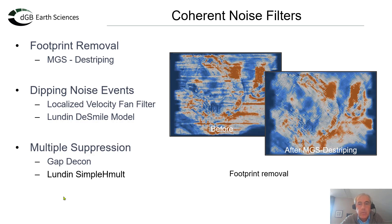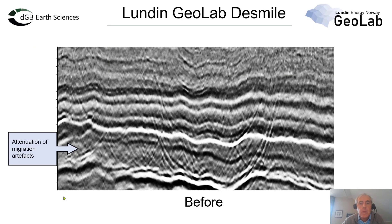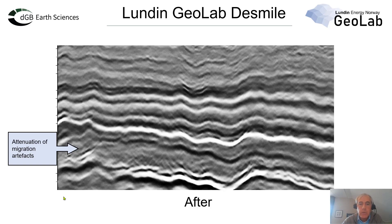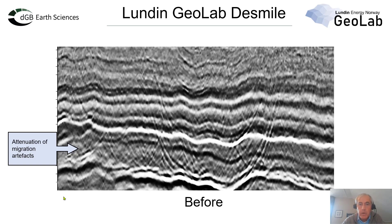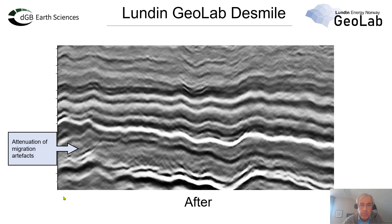For multiple suppression, we have the gap decon in the free version, and we have Lundin's Simple H-melt removal, a trained machine learning model. An example of D-Smile: this is a section that is riddled with migration smiles, and this is after application of this model. The model is a three-dimensional unit and it's blazingly fast — going from the noisy volume to the clean one is a matter of minutes.